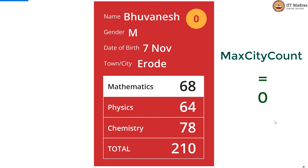For example, here we are coming across e-road for the first time. So we make a variable called e-road count, initialize it to 0, and since we have seen one card of e-road, we increment it by 1. So now e-road count is 1. And since e-road count being 1 is the maximum city count we have seen so far, we are going to update our max city count to 1.